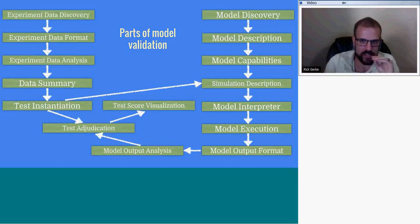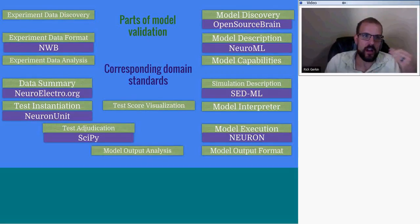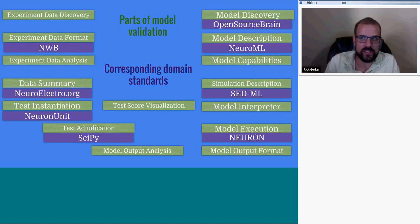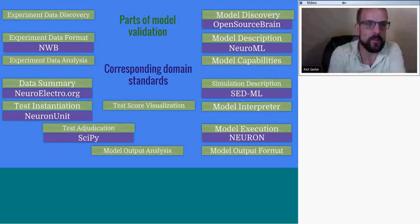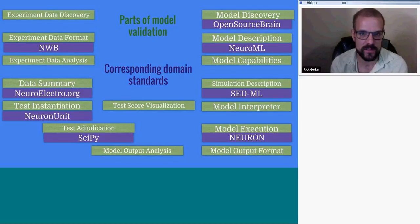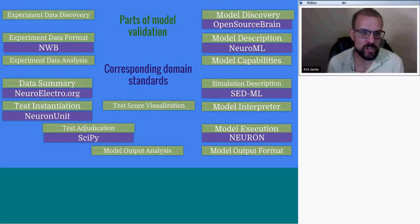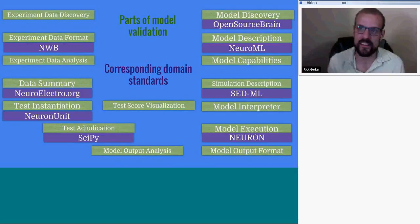In physiology, we're converging on several steps to a very small number of standards. For example, there are experimental data formats. There used to be really no common experimental data format for neurophysiology. Now there's a format called NeuroData Without Borders, NWB, which is going to host a large number of neurophysiology data going forward. It used to be the case that you'd have to search through a hundred journal articles and find a bunch of summary statistics and pool them all together — a lot of work.